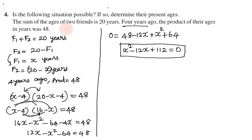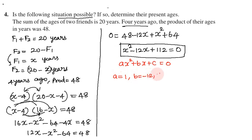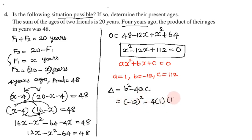To check if this situation is possible, we calculate the discriminant. Comparing with ax squared plus bx plus c equals 0: a equals 1, b equals minus 12, c equals 112. Discriminant D equals b squared minus 4ac equals minus 12 squared minus 4 times 1 times 112 equals 144 minus 448.